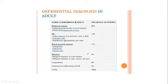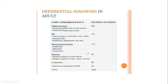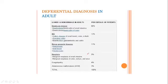Lower GI hemorrhage in adults by percentage of patients: diverticular disease accounts for 60%; inflammatory bowel disease including Crohn's disease and ulcerative colitis accounts for 13%; benign anorectal disease such as hemorrhoids and fissures accounts for 11%; neoplasia or malignancy accounts for 9%. The most common cause of lower GI bleeding is diverticulosis.